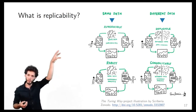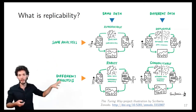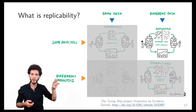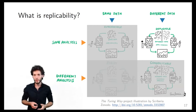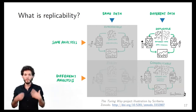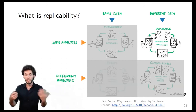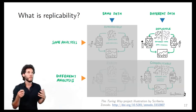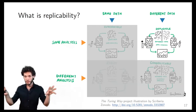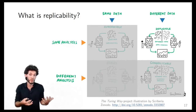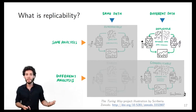On the left column you have approaches using the same data; on the right column, different data. On the top row we use the same analysis; at the bottom, a different analysis. Replicability is the intersection of using the same analysis with different data — the top-right corner. This means we are asking: if different groups of researchers run the same experiment on the same testbed at different points in time, and run the same analysis script on the different collected data, do they obtain the same results — the same conclusions? This is replicability.